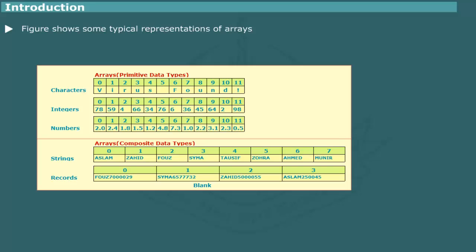A character array would consist solely of characters. It cannot contain integer or other types. Next figure shows examples of arrays containing composite or complex data types, namely strings and fixed-length records.